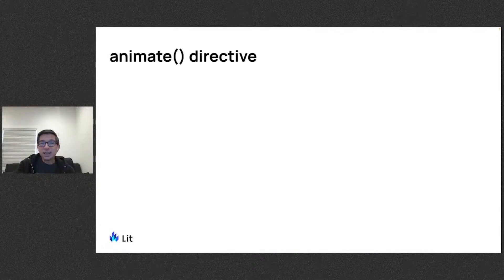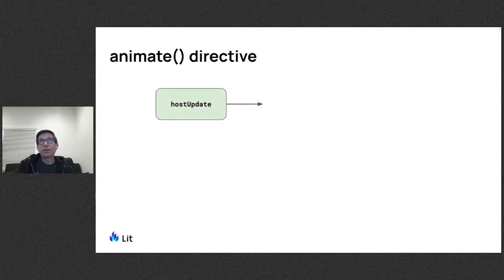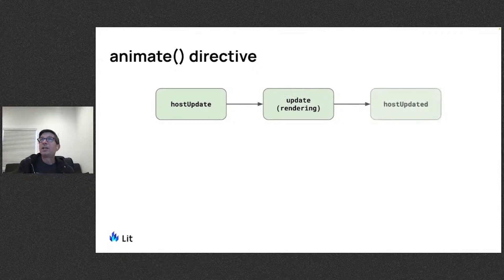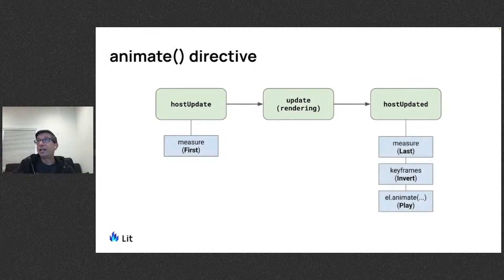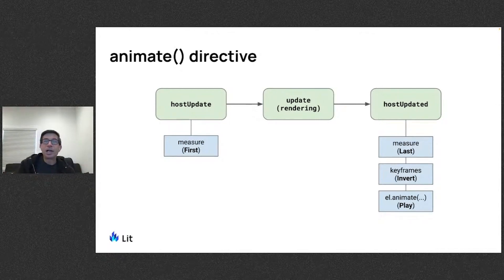Let's see how that comes together with the animate directive. We have the reactive controller lifecycle: first there's hostUpdate, then the actual element updating where rendering occurs, and then hostUpdated after rendering. In hostUpdate, we measure the current rendering. We let the rendering update however it wants. Then in hostUpdated, we measure the last position, compute the keyframes, and use element.animate — the Web Animations API — to play the animation.